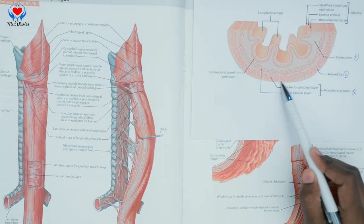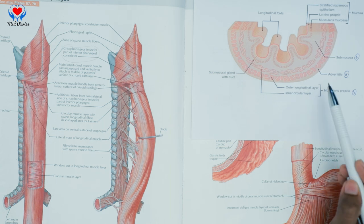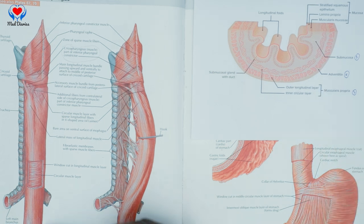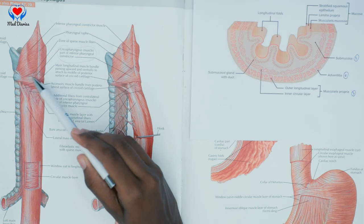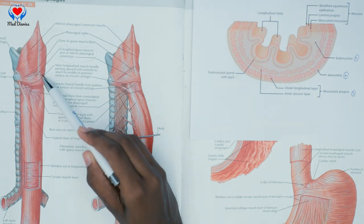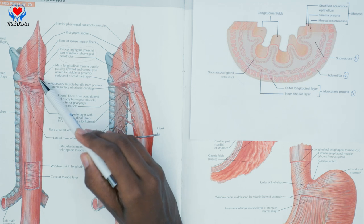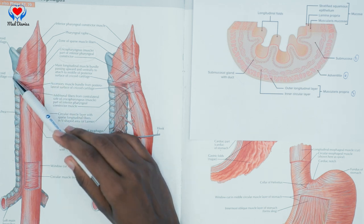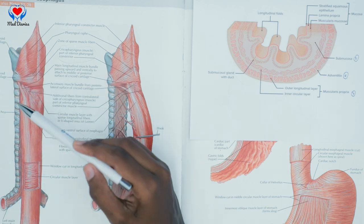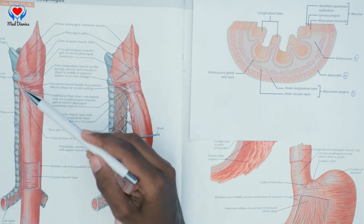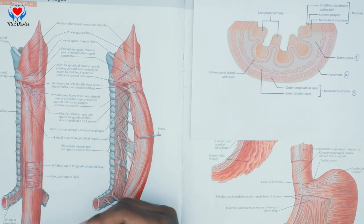In the muscularis propria, there is an inner circular layer and an outer longitudinal layer. However, at the top of the esophagus, the outer longitudinal layer is not continuous — it is covered by the inferior pharyngeal constrictor, which is attached to the cricoid cartilage anteriorly. These circular and longitudinal muscle layers produce the contractions that propel food.